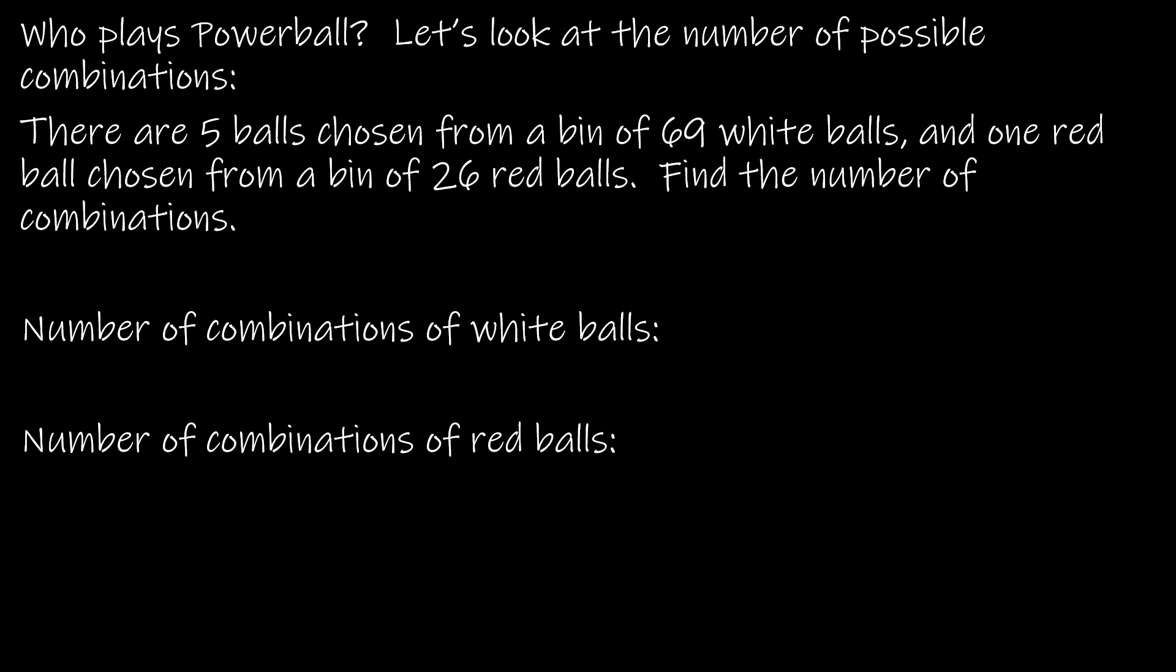Obviously there are a lot of applications for permutations and combinations, and we will have plenty of examples as we move through this course. But let's take a look at this particular example, which has to do with the Powerball and the number of possible combinations that are involved in the Powerball. So there are five balls chosen from a bin of 69 white balls and one red ball chosen from a bin of 26 red balls. Find the number of combinations. First off, this is a combination question and not a permutation question because the white balls are chosen from a bin. So it doesn't matter if I choose 23 first and 42 second or vice versa. It's still going to be the same outcome.